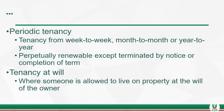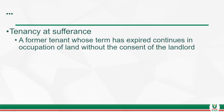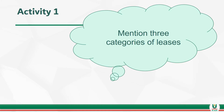The periodic tenancy is always renewable, except it is terminated or comes to an end when the term has been completed. Then you have the tenancy at will, which is where an owner of property allows someone else to live on the property at his will — there is no formal relationship and obligations are different. And lastly, you have the tenancy at sufferance. This is where a tenancy relationship has been brought to an end, but the former tenant has refused to deliver possession to the landlord, so he continues in occupation of the land without the consent of the landlord. For your first activity, I'd like you to mention three categories of leases.